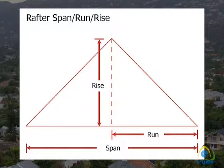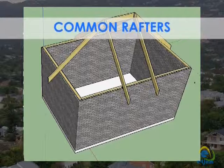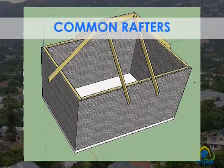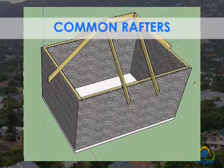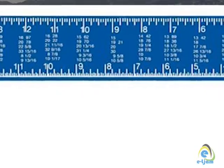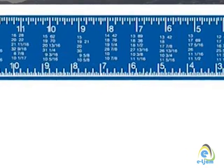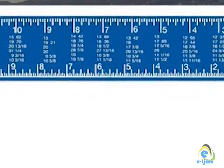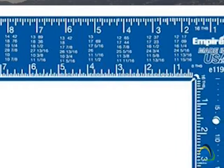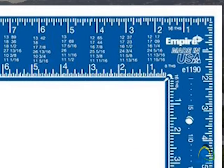The pitch is determined by dividing the rise of the roof by the span. Now that we have determined the pitch, we can go ahead and take the reading from the rafter table to determine the length of the common rafter. This table is used in connection with the marks and figures on the outside edge of the square.